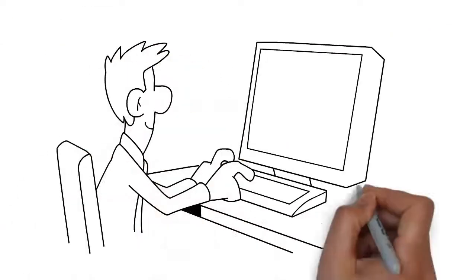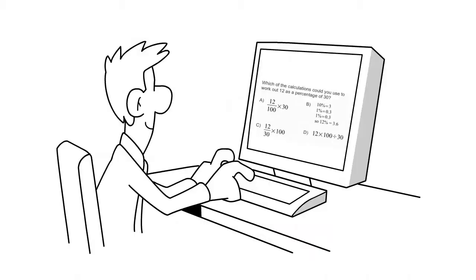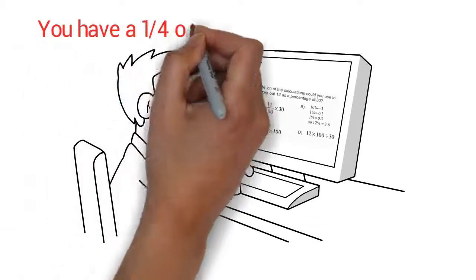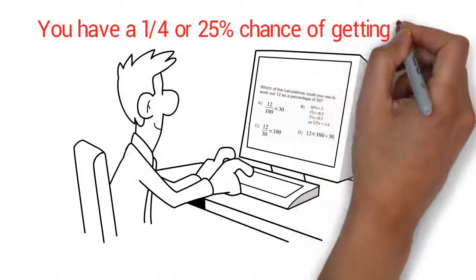Here is how it works. Consider a multiple-choice question with four answers. If you guess, you have a 1 out of 4 or 25% chance of getting it right.